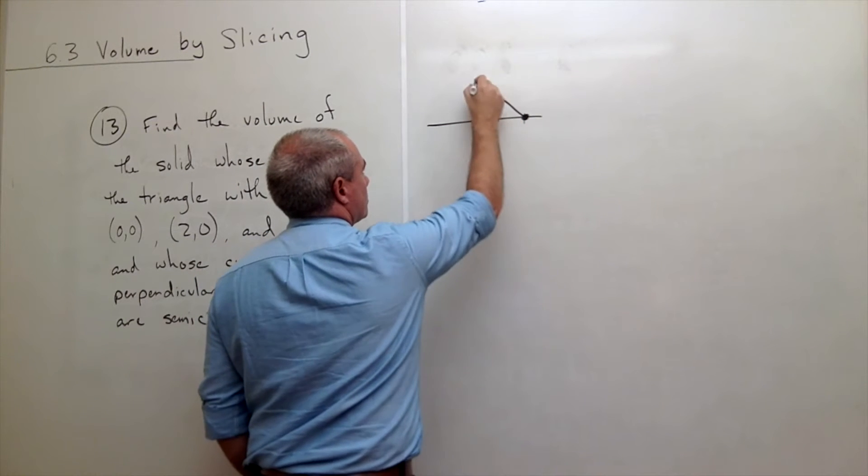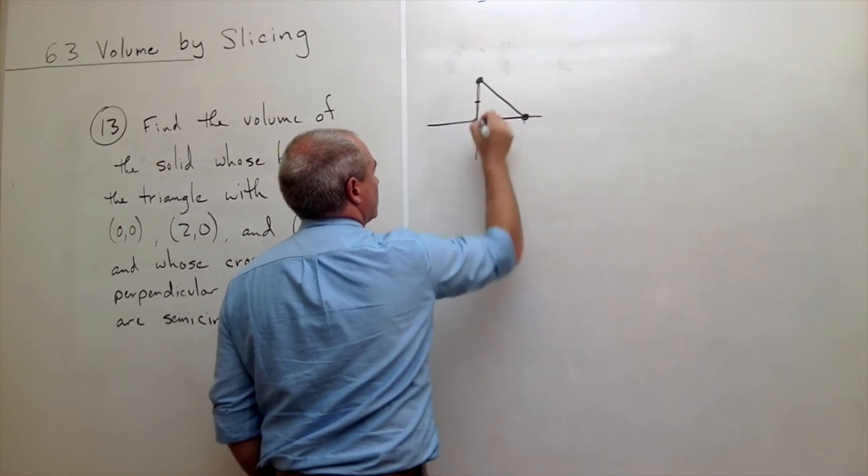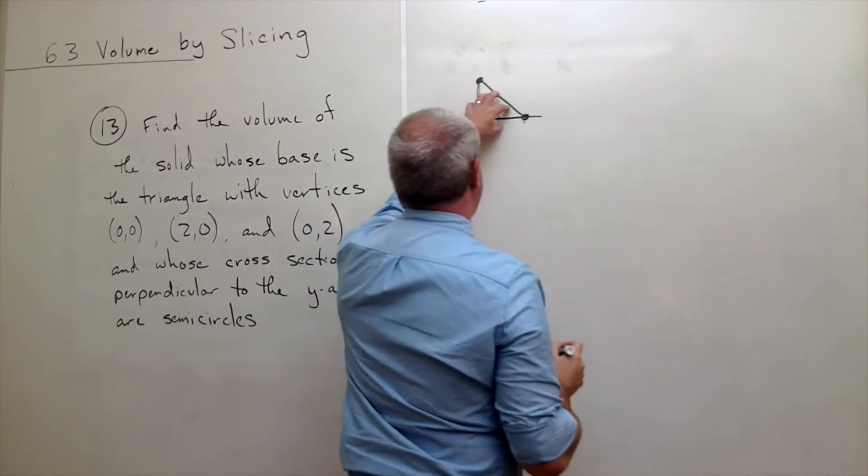So we've got this isosceles right triangle and that is my base region.